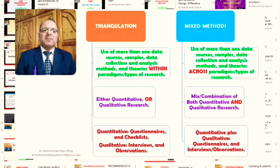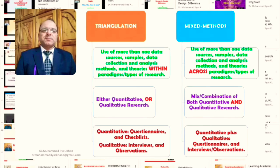While in mixed methods research, we do the same across paradigms. In other words, we make use of a variety of data sources, samples, and data collection and analysis methods in more than one type of research that we mix or combine together. In triangulation, either quantitative or qualitative research is conducted. And in mixed methods research, as the very name suggests, there is a combination of both quantitative and qualitative research.